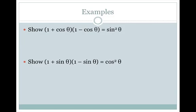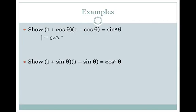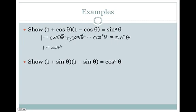Now we're going to use these identities. We need to show that (1 plus cosine theta) times (1 minus cosine theta) equals sine squared theta. We do not change the right-hand side. So we FOIL the left side: 1, minus cosine theta, plus cosine theta, minus cosine squared theta. Those middle terms cancel, and we are left with 1 minus cosine squared theta equals sine squared theta.